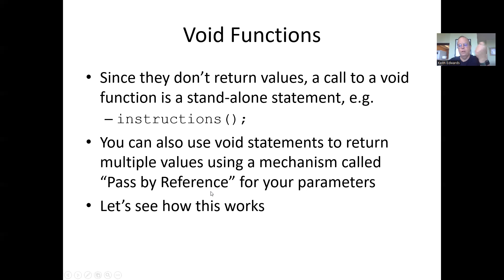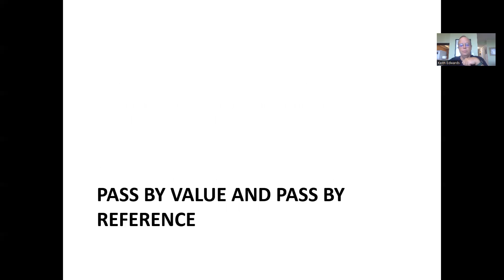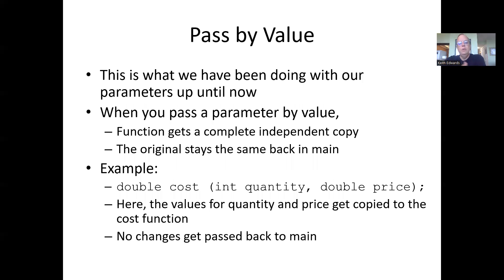Let's see how pass by reference allows us to return multiple values. What we've been doing up to now is called pass by value. When you pass a parameter by value, the function gets a complete and independent copy of that parameter. The original back in main stays the same—you don't modify it at all.